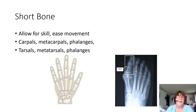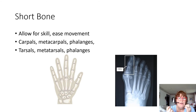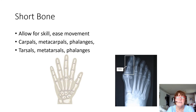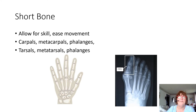Short bones allow for skill and movement. We have them in our hands, fingers, and feet — carpals, metacarpals, and phalanges. Phalanges are fingers and toes. Then we have tarsals, metatarsals, and phalanges as the toes on our feet. These short bones really allow us to move very quickly and easily.